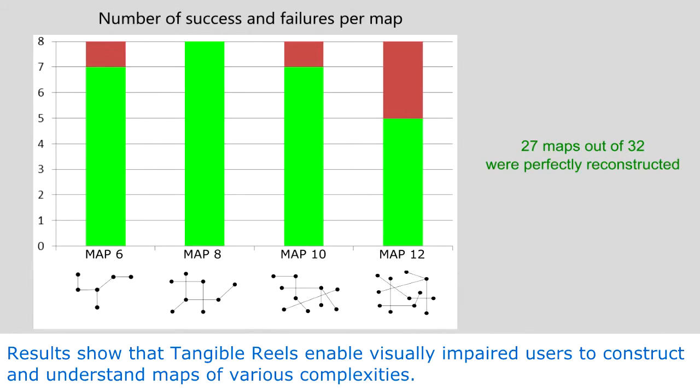Results show that tangible reels enable visually impaired users to construct and understand maps of various complexities.